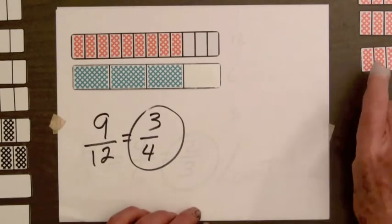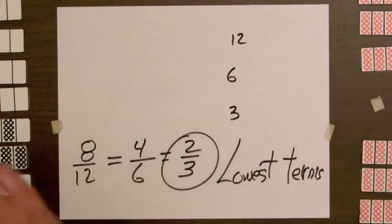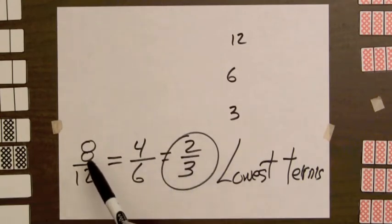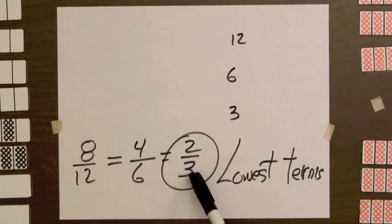Let's go back and look at the first example. We had eight-twelfths equal four-sixths equals two-thirds. Now we can divide both eight and twelve by two to get four-sixths. We can divide four and six by two to get two-thirds.